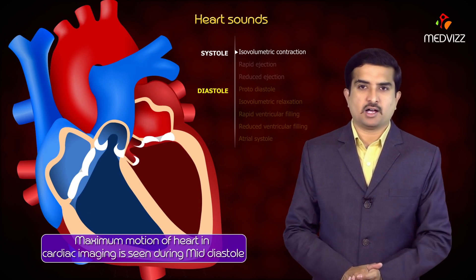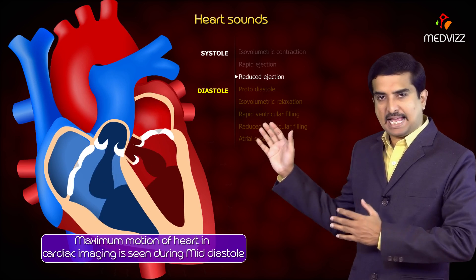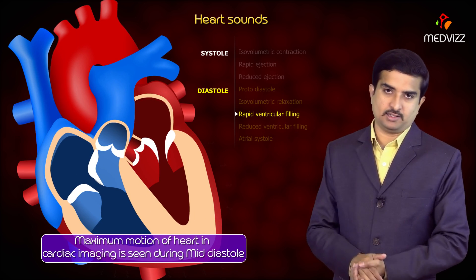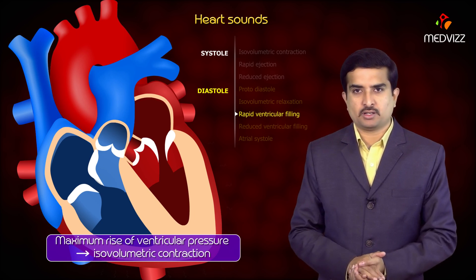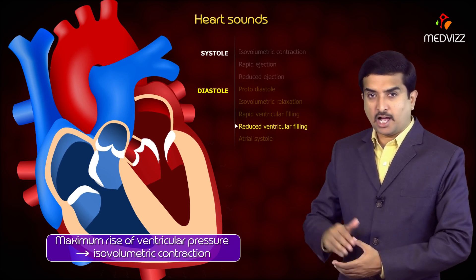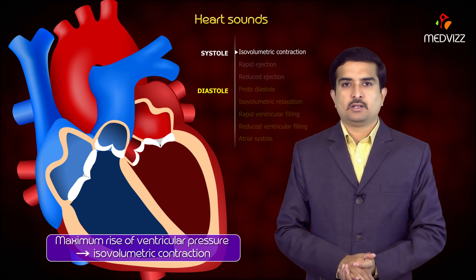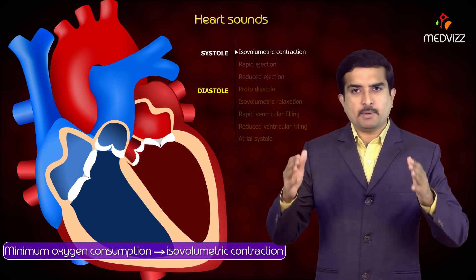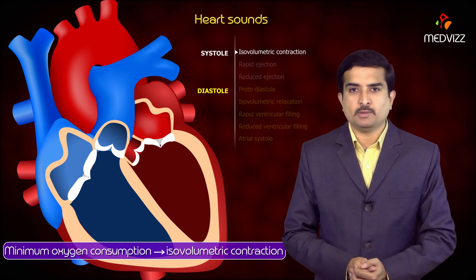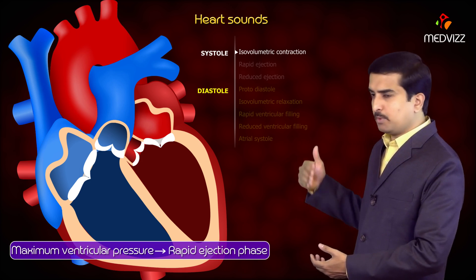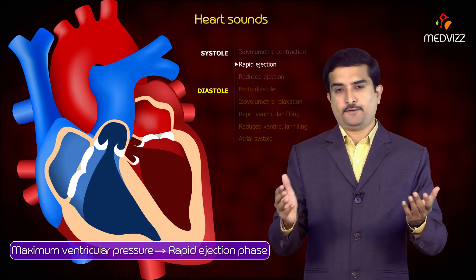Maximum motion of the heart in cardiac imaging is seen during the mid-diastolic phase of the cardiac cycle. The maximum rise of ventricular pressure is mainly seen during isovolumetric contraction of the cardiac cycle, and minimum oxygen consumption is also seen during isovolumetric contraction, but the maximum ventricular pressure is seen in the rapid ejection phase.